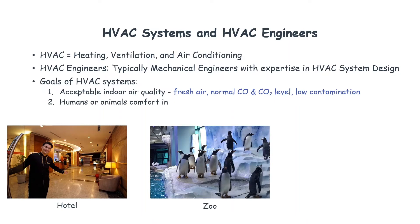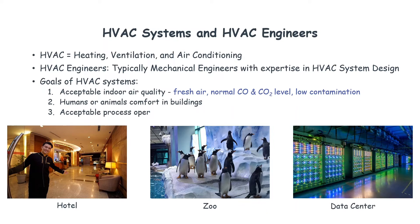The second goal is to provide comfort for humans or animals inside buildings. Comfort in a building means that temperature, humidity, and a few other parameters related to the building's air are at an acceptable range. The third goal is to provide an acceptable environment for process operation, meaning the HVAC system must maintain air temperature and humidity acceptable for process equipment such as electronics in a data center.